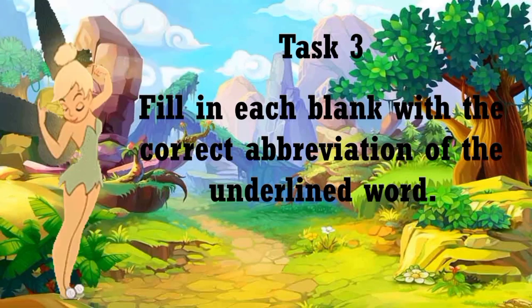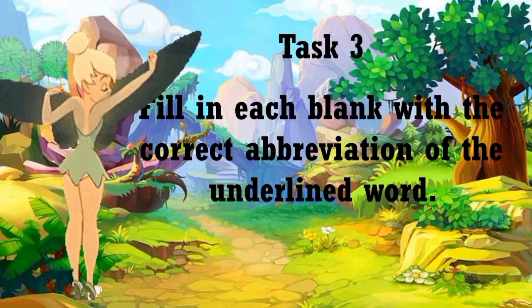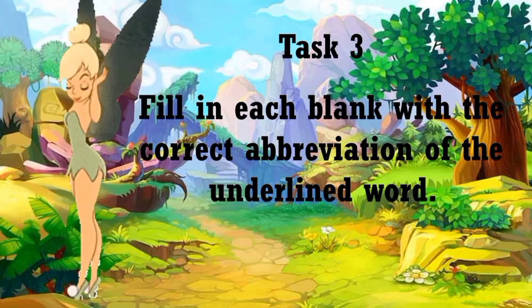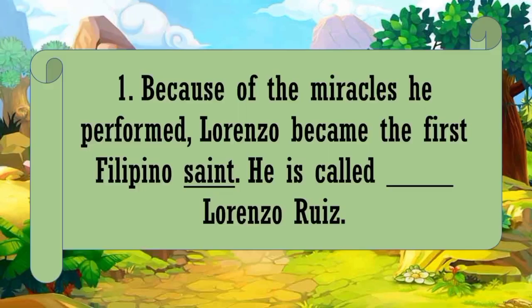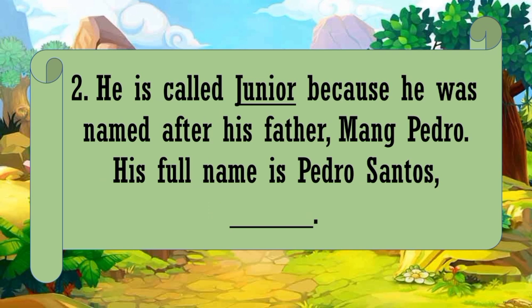And for our Task 3, fill in each blank with the correct abbreviation of the underlined word. Number 1: because of the miracles he performed, Lorenzo became the first Filipino saint. He is called St. Lorenzo Ruiz. Correct, Saint. Number 2: he is called Junior because he was named after his father, Mang Pedro. His full name is Pedro Santos, Jr. Correct.